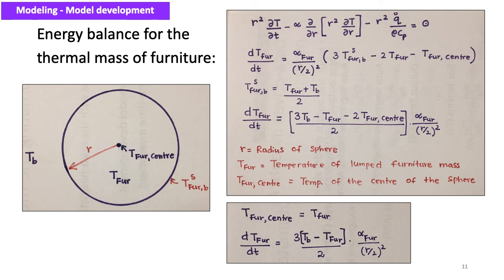The modeling of household furniture including internal walls is important when modeling buildings. Furniture acts as either a heat sink or heat source depending on the temperature difference between itself and the surrounding air, and its presence prolongs the heating and cooling times of buildings. To simplify the modeling approach, furniture is defined as a spherical object with equal mass and equivalent average thermal diffusivity.